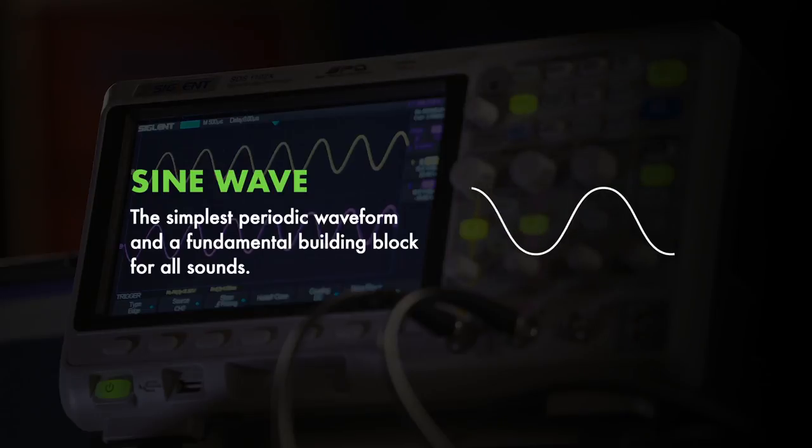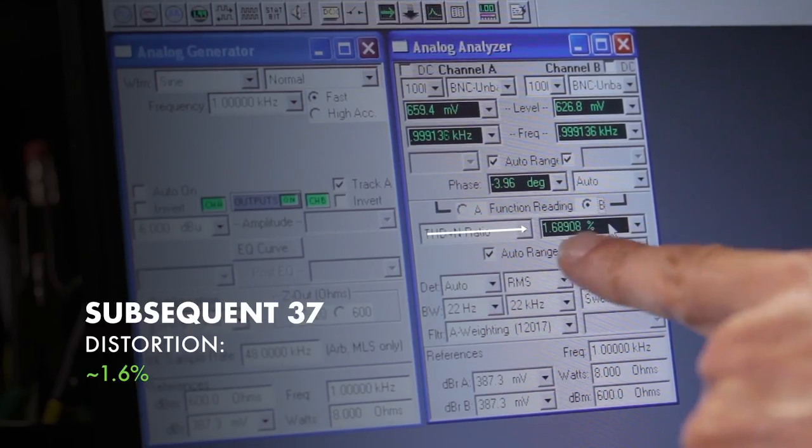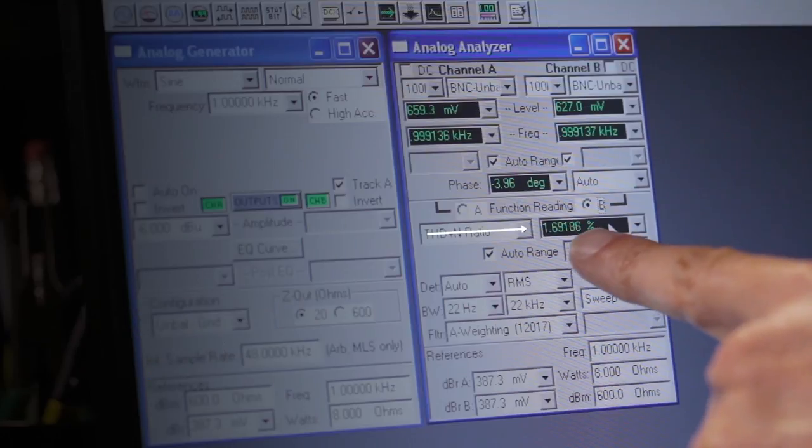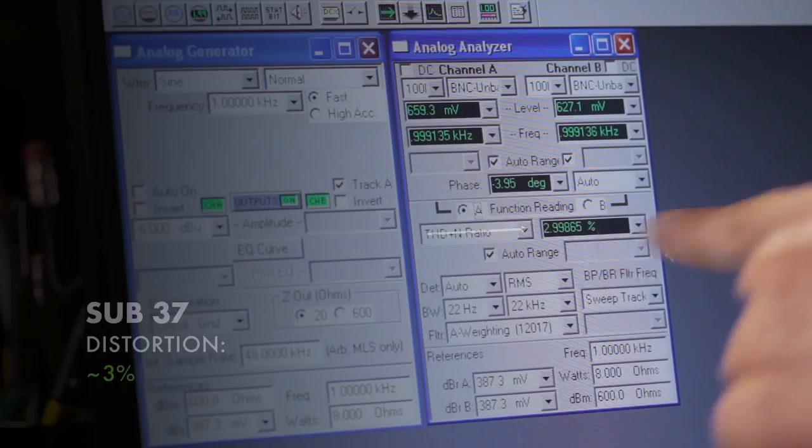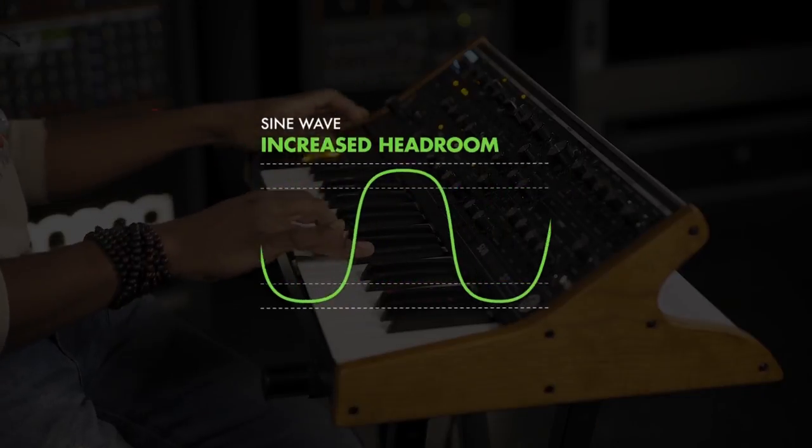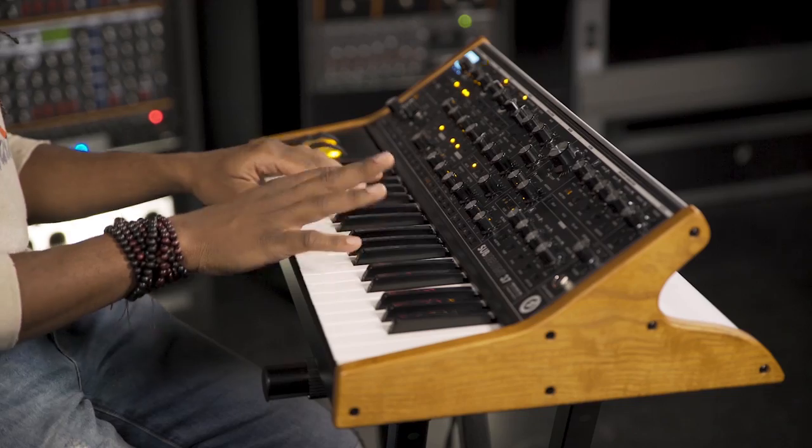Now let's look at the output of the audio analyzer. The Sub-37 Tribute Edition has a distortion of around 1.6% and the Subsequent 37 has a distortion of around 3%. The idea was to increase the dynamic range of the mixer so that we had more headroom. What this allows you to do is to increase the clean vocabulary of the Subsequent 37.